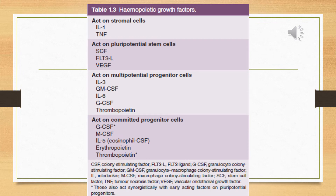Another important topic is growth factors. Growth factors act on different cells and in different conditions. Those which act on stromal cells are Interleukin-1 and Tumor Necrosis Factor. Those that act on pluripotent stem cells are SCF, FLT3, and vascular endothelial growth factor. Many growth factors like G-CSF, monocyte colony-stimulating factor, Interleukin-5, erythropoietin, and thrombopoietin act on committed progenitor cells.